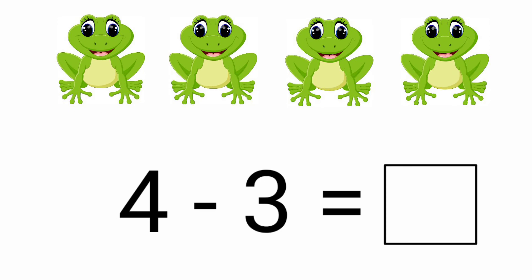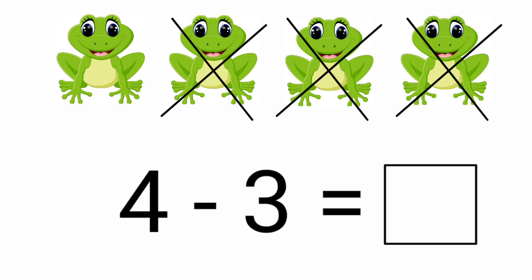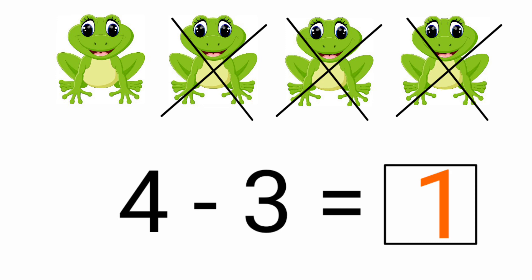Look at the next picture. How many frogs are there? There are 4 frogs. Here we need to subtract 4 minus 3, so we subtract 3 frogs from 4 frogs. Let's subtract from right to left: 1, 2, 3. How many frogs are left? There is only 1 frog left. The answer is 1. Let's write it in the given box: 4 minus 3 equals 1.